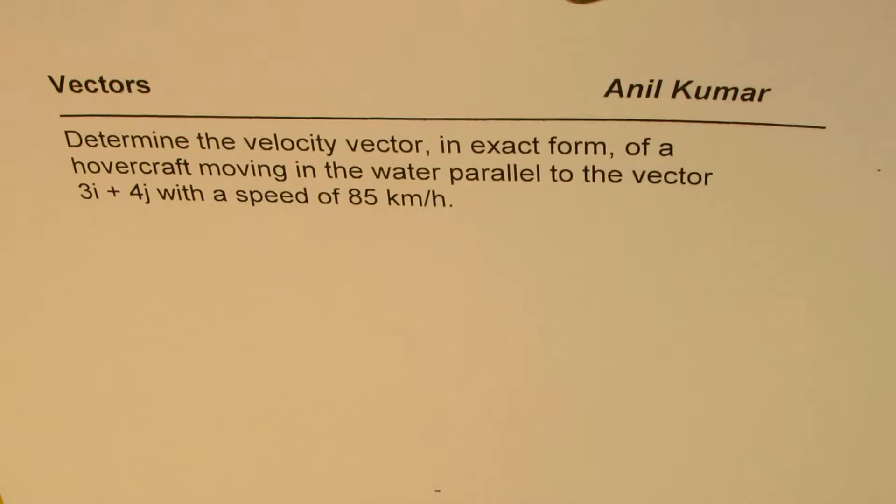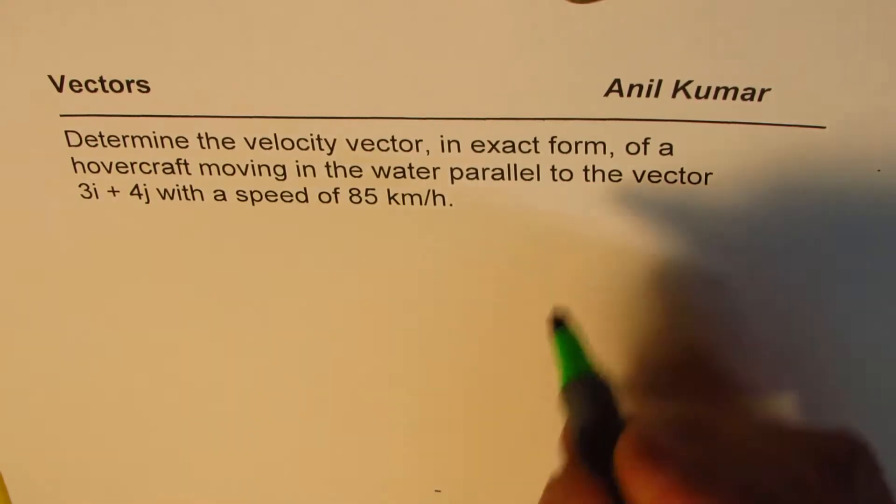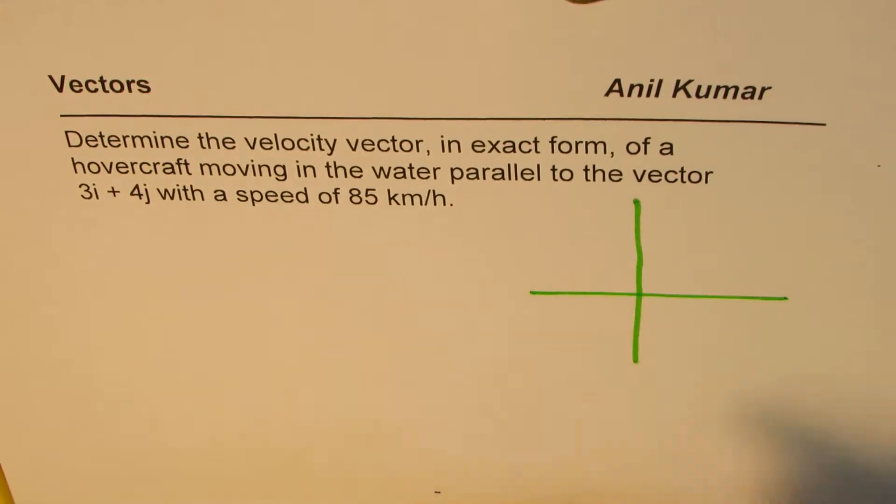The question here is, determine the velocity vector in exact form of a hovercraft moving in the water parallel to the vector 3i plus 4j with a speed of 85 kilometers per hour. You can always pause the video, answer the question, and then look into my suggestions.